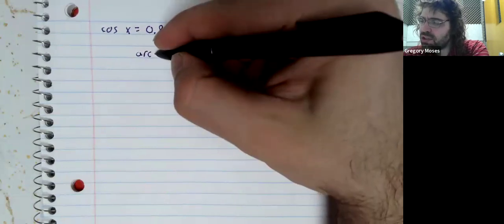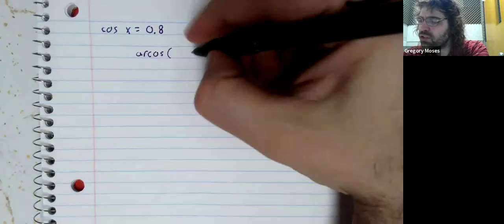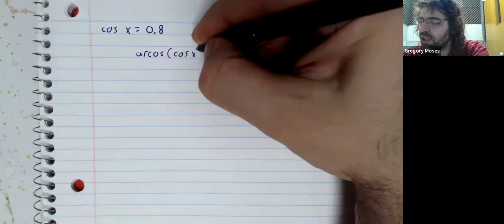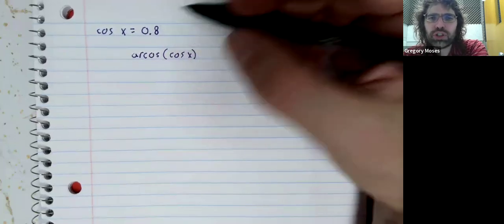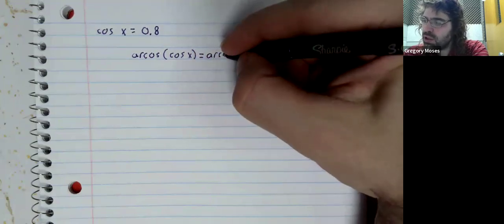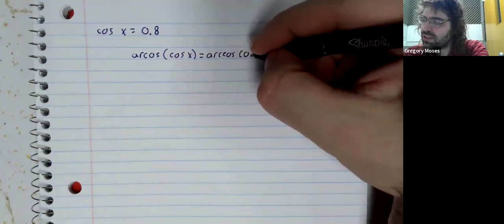0.8, unlike one-half and the square root of 2 over 2, this isn't something that we know the solution to, but inverse trig functions to the rescue.